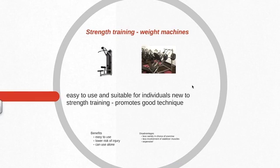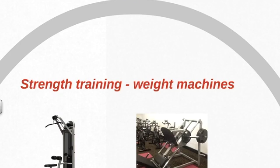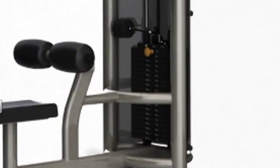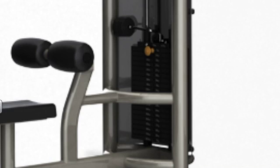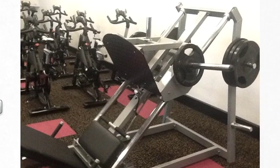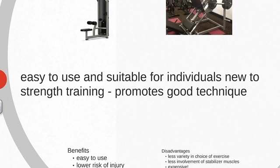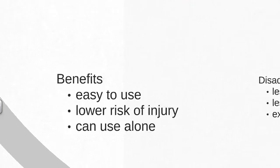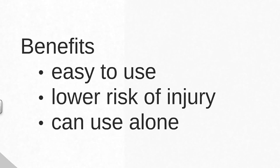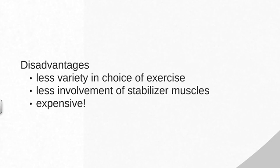The first type of equipment is weight machines, sometimes referred to as stack weights. Weight machines make it easier to maintain good technique as the weight is on a pulley or roller system, and the individual simply selects weight by inserting a pin. Benefits include being easy to use, lower risk of injury, and can be used alone. Disadvantages include less variety of exercise compared to free weights, less involvement of stabiliser muscles particularly in the core, and they are very expensive.